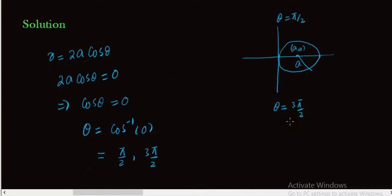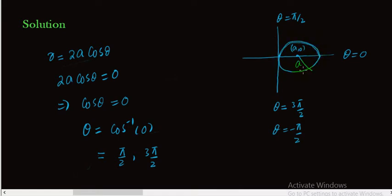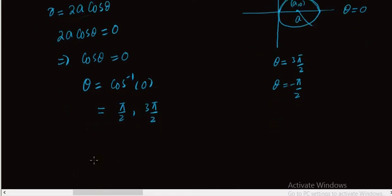So theta equals pi by 2 and theta equals 3pi by 2, which can also be written as theta equals minus pi by 2. So theta varies from minus pi by 2 to pi by 2. As this curve is symmetric about the x-axis, or the polar axis, we can use symmetry to find the arc length. We first find the portion of the curve above the x-axis and then double it.